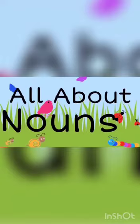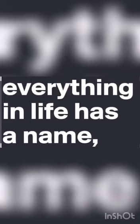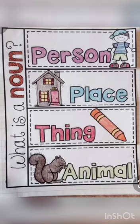Nouns are also called naming words. Everything around us has a name, such as people, places, animals, and things. All naming words are called nouns.